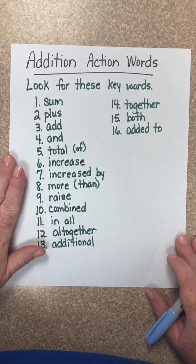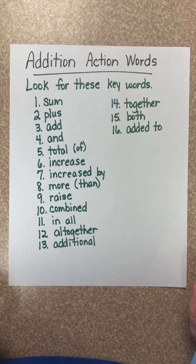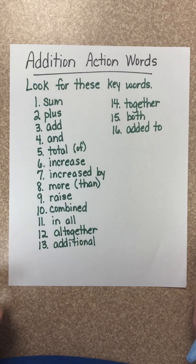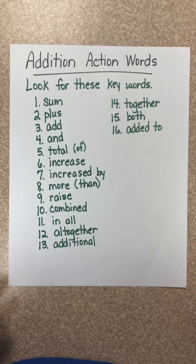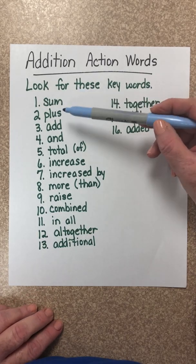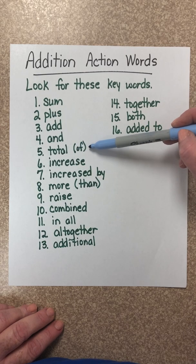Now let's look at some action words, sometimes referred to as signal words for addition. You are to look for these kinds of words when you are reading a word problem. So these are some examples: sum, plus, add, and, total or total of.